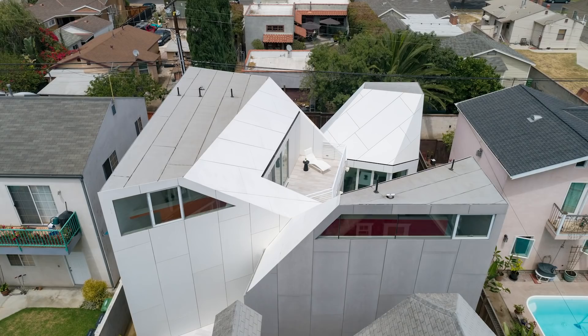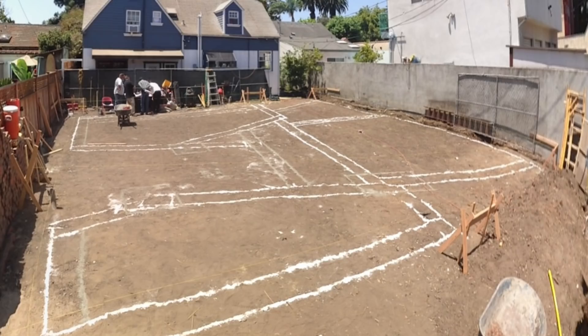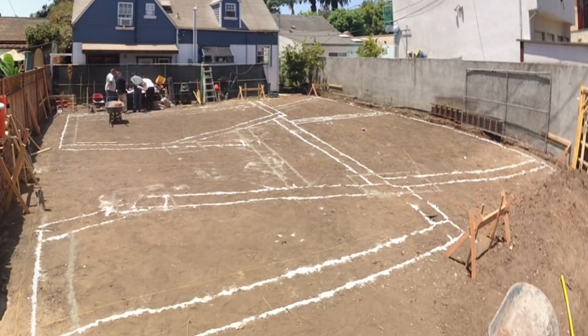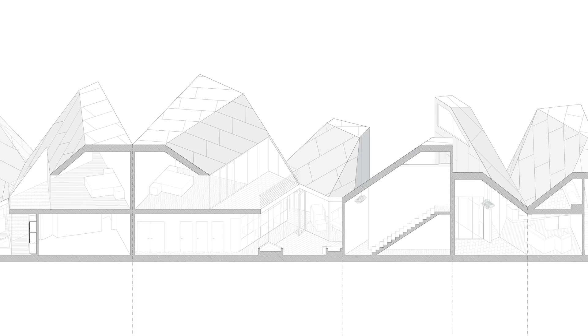One of the best moments in the construction process was when we first chalked out the foundation. They cleared the site — there was an existing accessory building, a garage, that was removed. After clearing and demoing everything, the contractor took our drawings and drew them out at full scale with white chalk on the site, so you could see the foundation lines prior to excavation. It was a kind of drawing at full scale, and it was the first moment when we really understood the size of the house in relation to its neighbors and the existing house. It was a little bit of an aha moment for everyone.